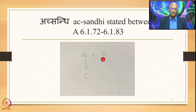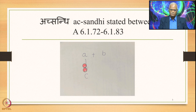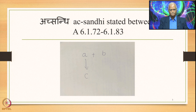In the right-hand side environment of B, A is substituted by C. So A plus B is the input and C plus B is the output.